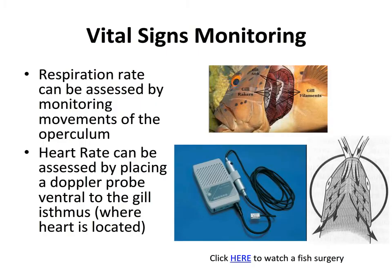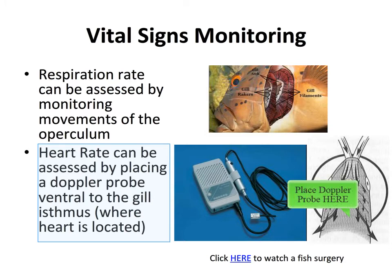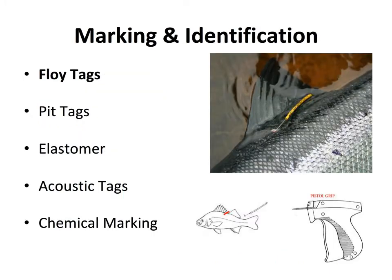Once the fish is set to recover from anesthesia, move the air stone and pump over to tank A, which contains fresh water with no anesthetic agent, and the fish should eventually revive. To monitor a fish during anesthesia, use the movements of the opercula or gill flaps to assess respiratory rate. Get a baseline before anesthesia and make sure it doesn't go down too far. You can also monitor heart rate by placing a Doppler probe underneath the gill isthmus — the heart is very close to the ventral surface, so you should be able to get a reading fairly easily with a little gel.